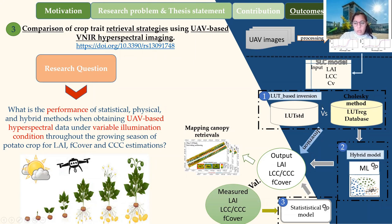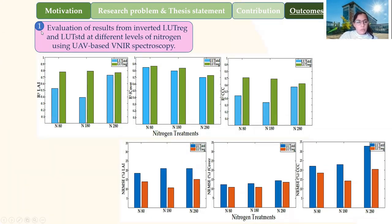All three analyses were used for estimating the canopy traits, and results were validated with ground measurements. The best approach was then used for mapping the canopy traits. The first outcome showed that the regularized lookup table, especially for LAI and canopy chlorophyll content, delivered higher accuracy than the standard one, as well as for fraction vegetation cover, although the improvement is not significant but still there is a small improvement. The data was classified under the different levels of nitrogen.